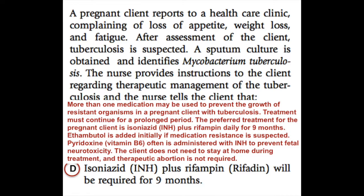In a pregnant client with tuberculosis, treatment must continue for a prolonged period. The preferred treatment is isoniazid (INH) plus rifampin daily for nine months. Ethambutol is added initially if medication resistance is suspected. Pyridoxine (vitamin B6) is often administered with INH to prevent fetal neurotoxicity.